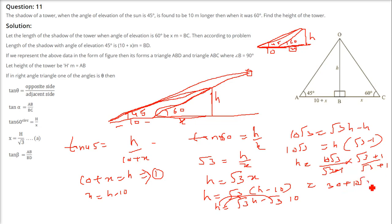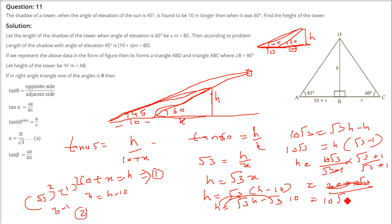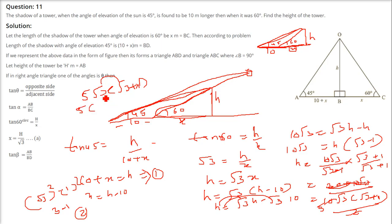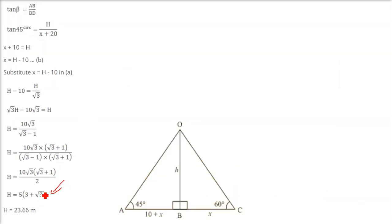We cannot leave the root in the denominator, so we multiply numerator and denominator by (root 3 plus 1). We get 10 root 3 times (root 3 plus 1), and the denominator becomes (root 3)² minus 1² equals 3 minus 1 equals 2. So H equals 10 root 3 times (root 3 plus 1) divided by 2, which simplifies to 5 times (3 plus root 3), giving 5 root 3 times (root 3 plus 1). You can substitute root 3 as 1.732 to find the decimal answer.